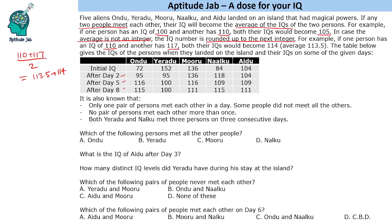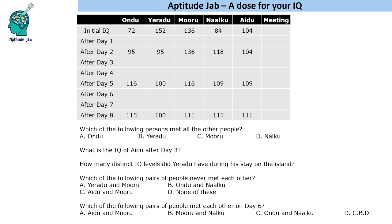To solve this problem, we will make a table and for each day find who meets which person. Looking at day 2, Muru's IQ remains the same, so Muru must not have met anyone. Similarly, Aidu's IQ also remains the same. After day 2, both O and Y have equal IQ, so O and Y must have met on day 2 — that's the only way they can have equal IQ.